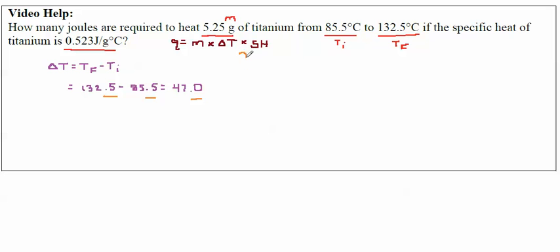Now, when I plug stuff in, I'm solving for Q, because it's asking what is my heat. So I say Q equals my mass, which is 5.25, and my units are grams, times my change in temperature, which is 47.0. So, remember, units for temperature are going to be degrees Celsius, times the specific heat. And the specific heat of titanium is 0.523.